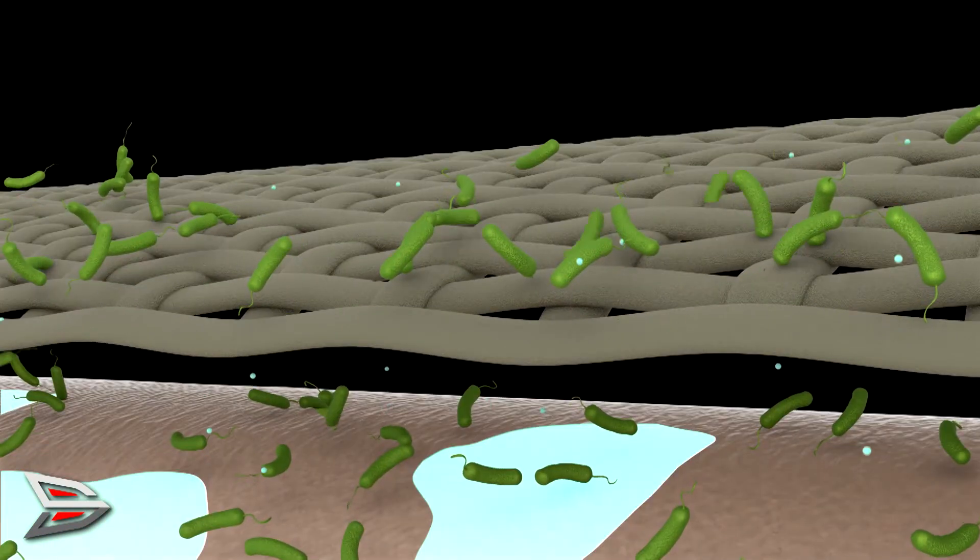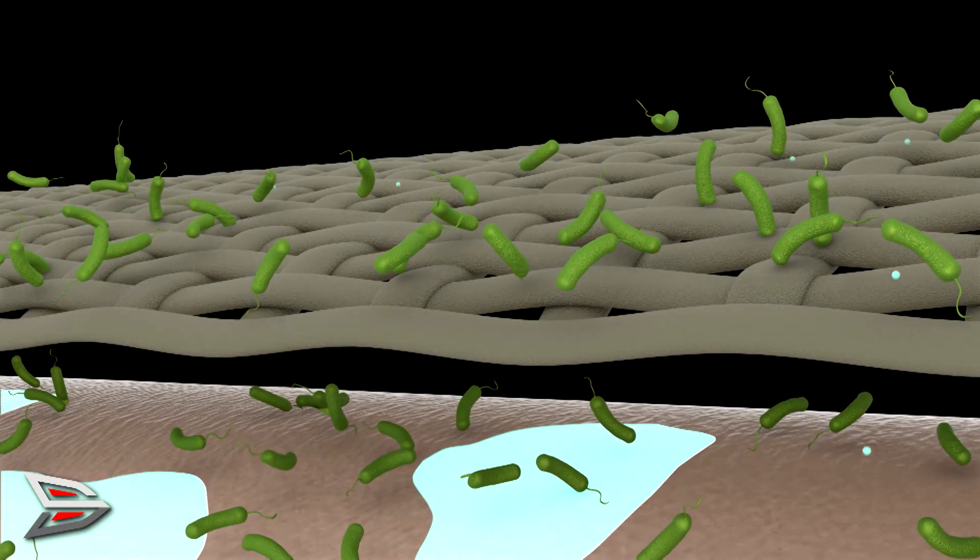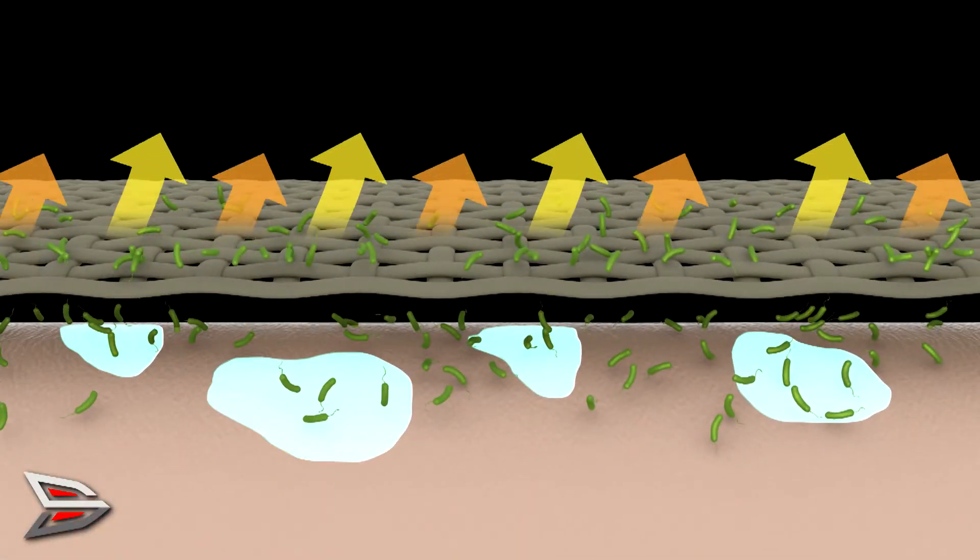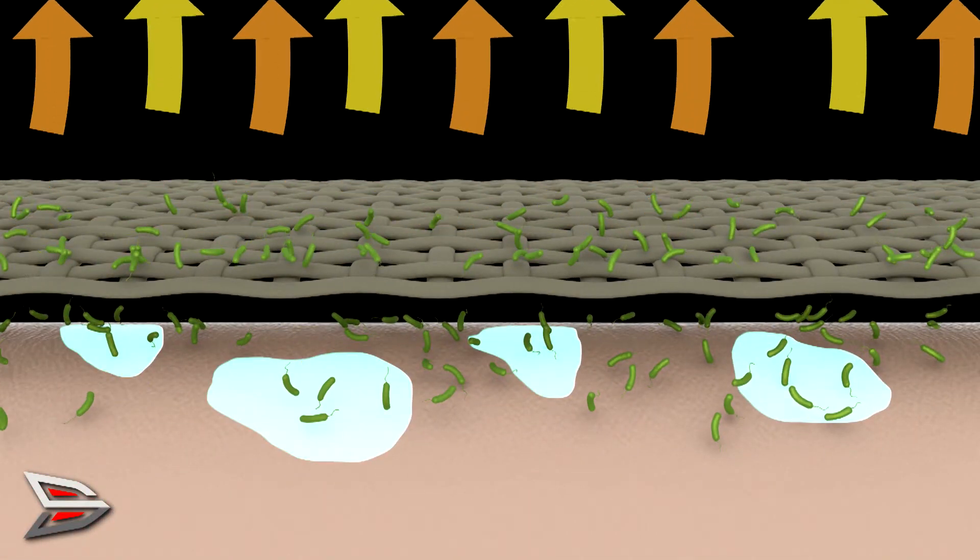Regular fabric absorbs these odor compounds and bacteria along with your sweat, creating a second platform for bacteria growth and odor generation.